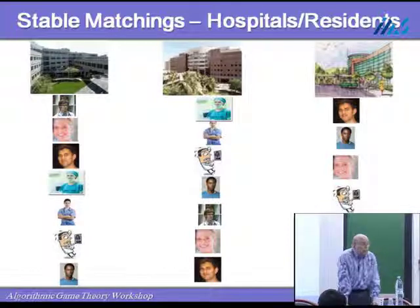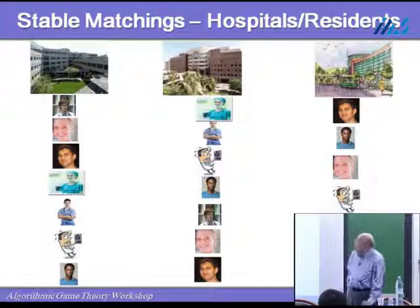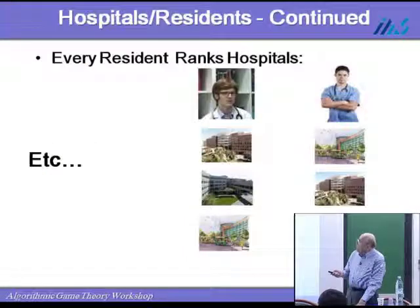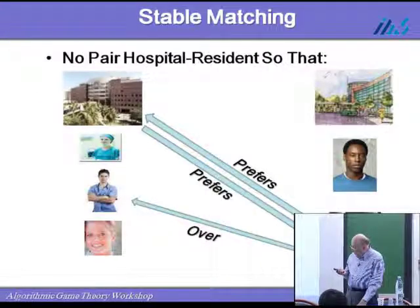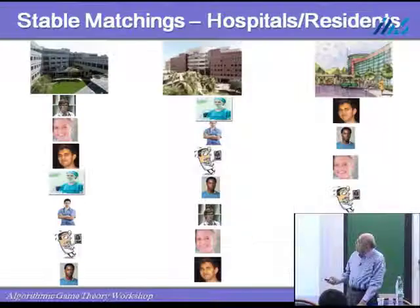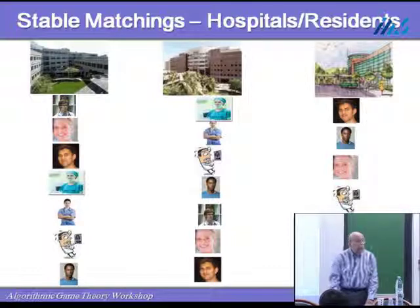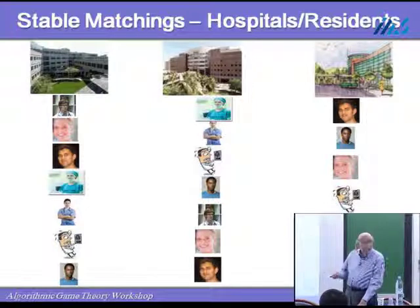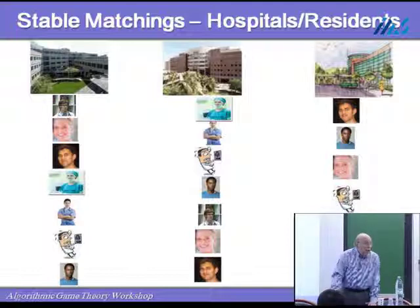This is in the context of assigning interns to hospitals, and it's actually based on an actual situation in the United States. There are about 1,800 hospitals. Around June, around this time of year, each of these hospitals has information about the people about to finish medical school. Every hospital ranks these candidates to become residents in the hospital.